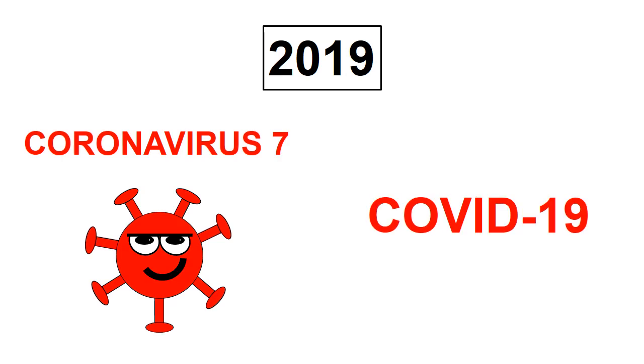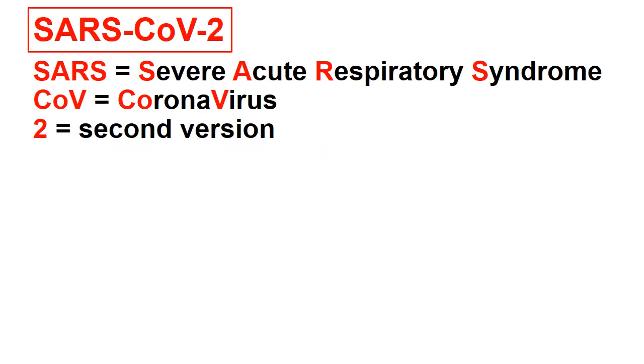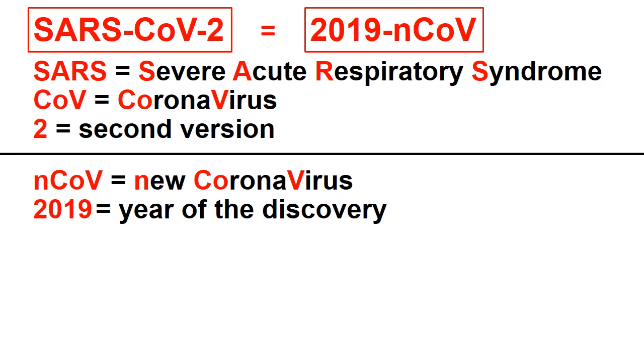And the current COVID-19 pandemic. The name of the actual virus is SARS-CoV-2, SARS meaning severe acute respiratory syndrome, CoV meaning coronavirus, and 2 because it is the second version of the virus. It is also called 2019-nCoV because it is the new coronavirus discovered in 2019.